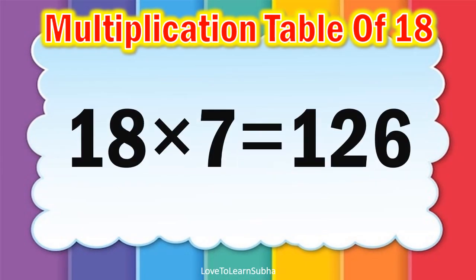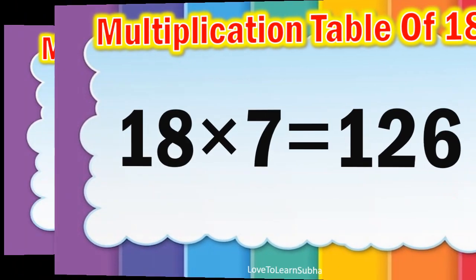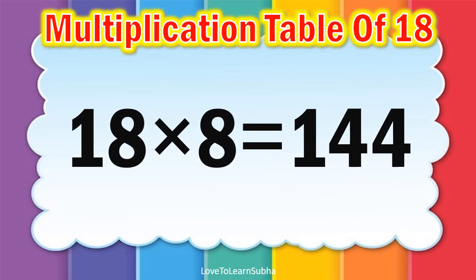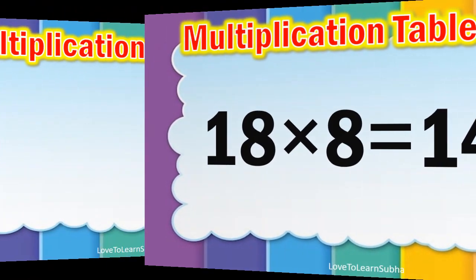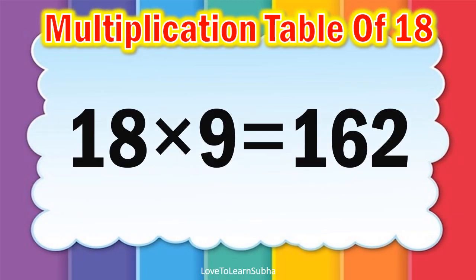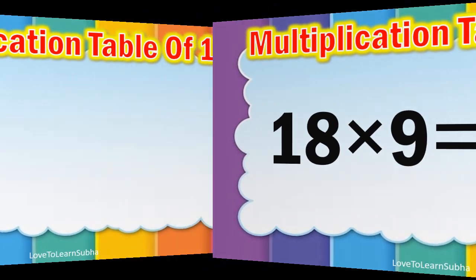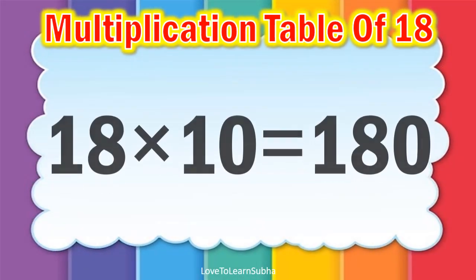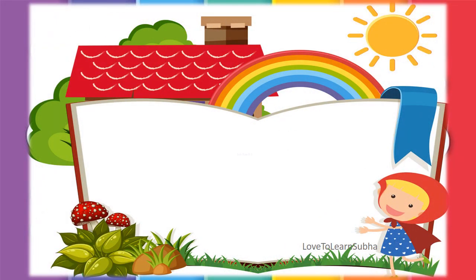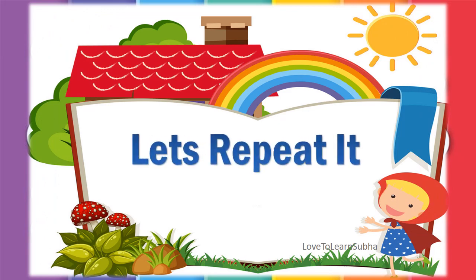18 sevens are 126, 18 eights are 144, 18 nines are 162, 18 tens are 180. Now let's repeat it once again.